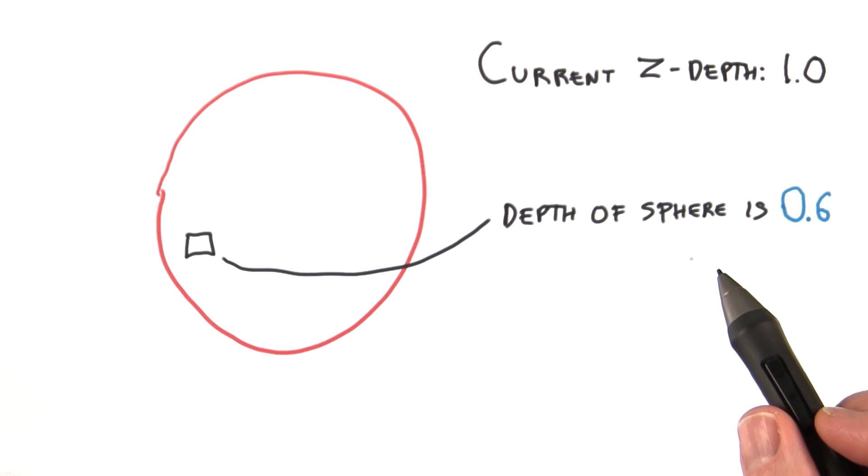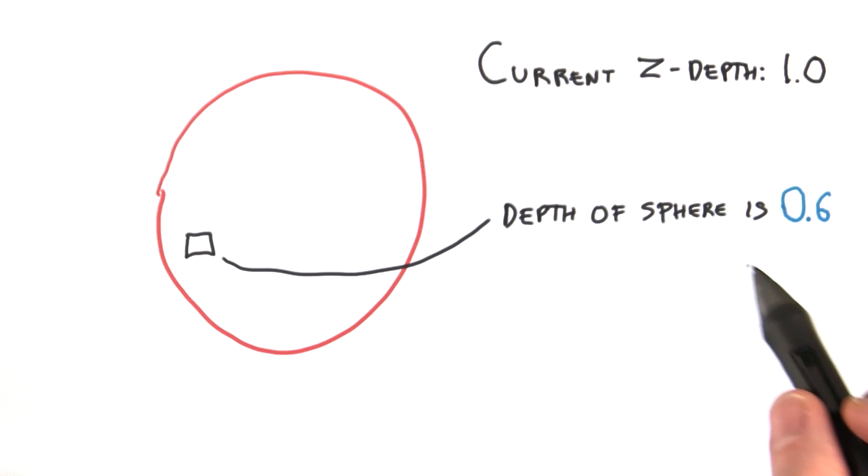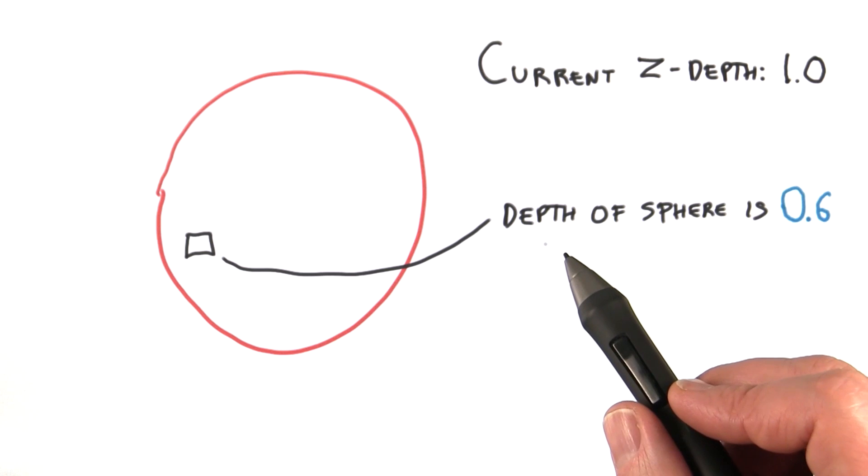This value is then checked against the current value stored in the z-buffer, which you'll recall we've initialized to all ones. If the object's distance is lower than the z-depth value stored, the object is closer to the camera, and so the color of the object is then stored in the image's color buffer.